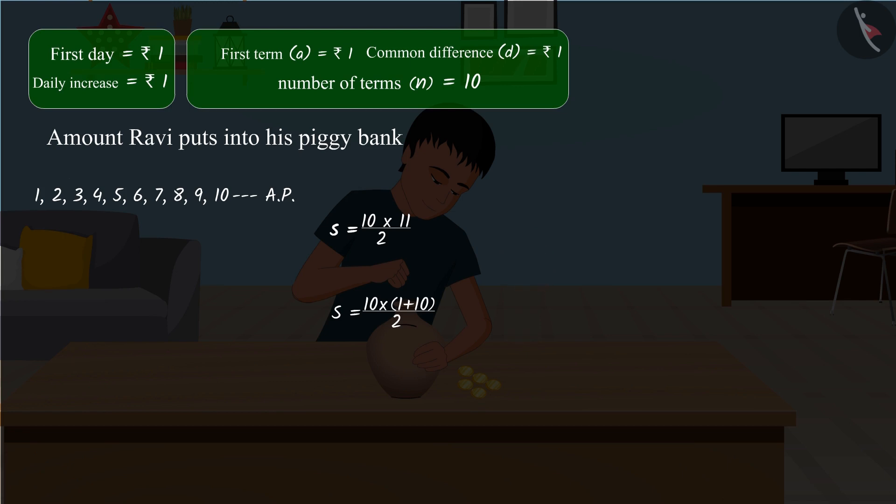We can see that the number 10 shows the number of terms of the arithmetic progression. Number 1 in bracket is the first term of the arithmetic progression and 10 is the last term of the arithmetic progression. Therefore, in this manner, we can find the sum of terms of a finite arithmetic progression.